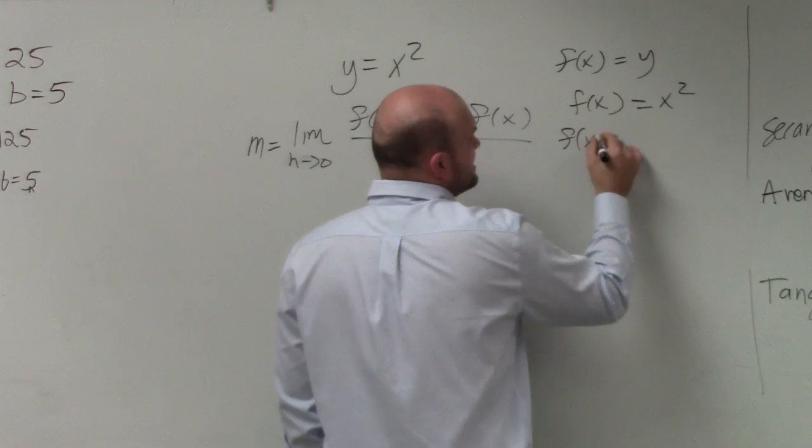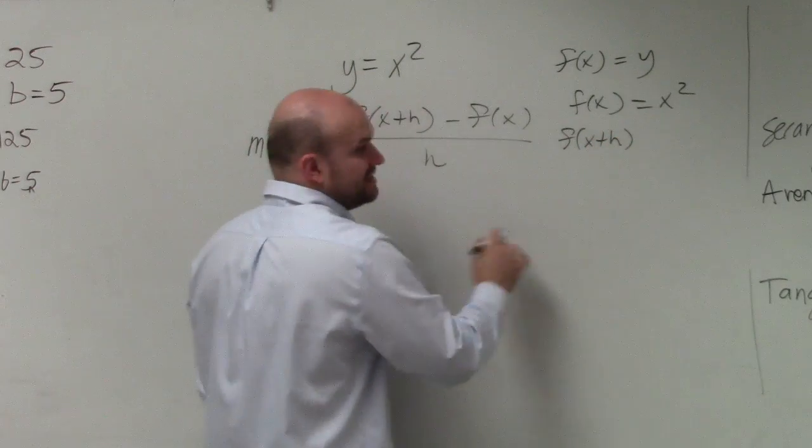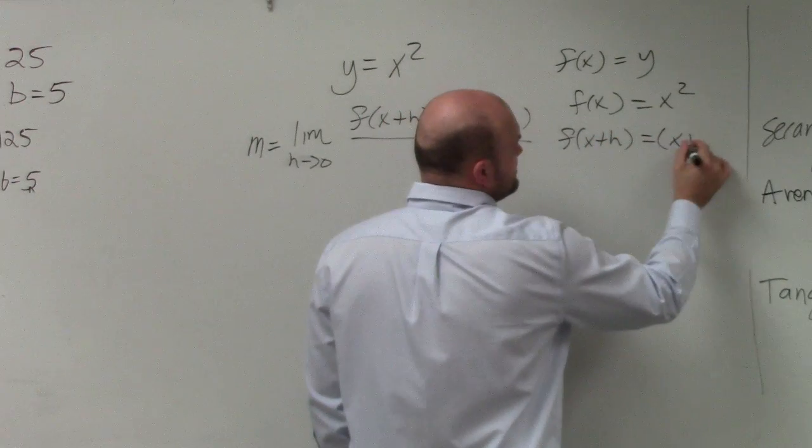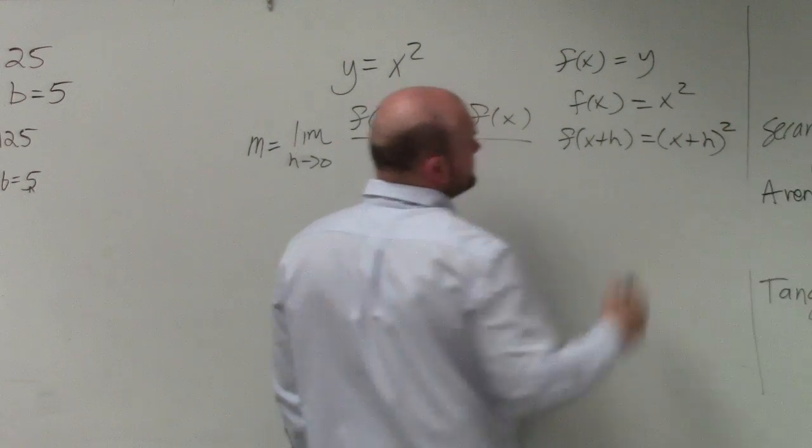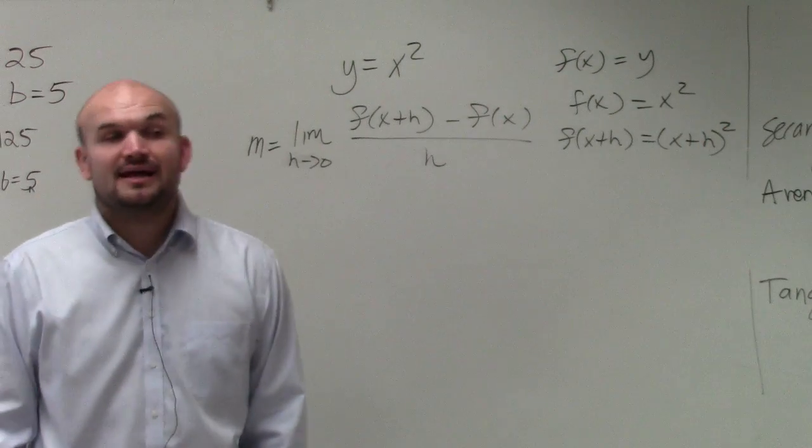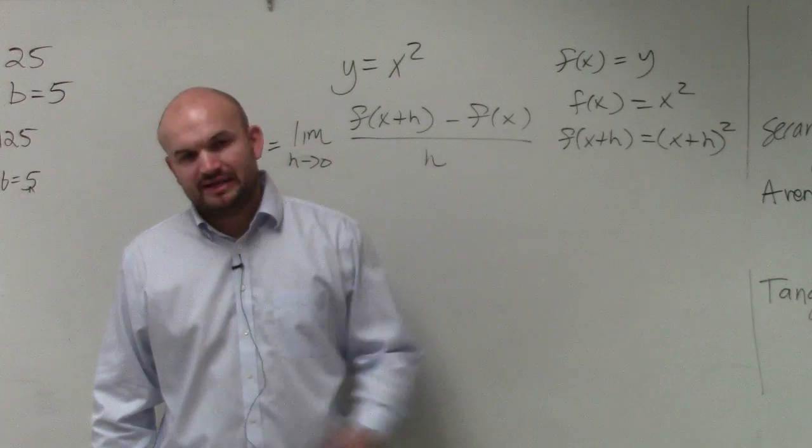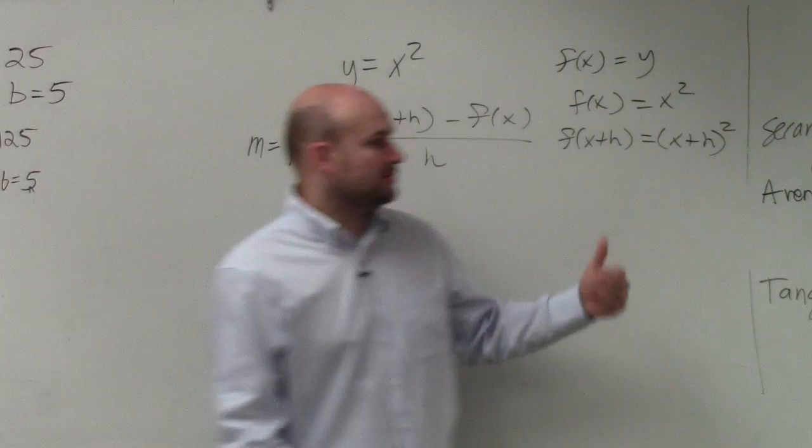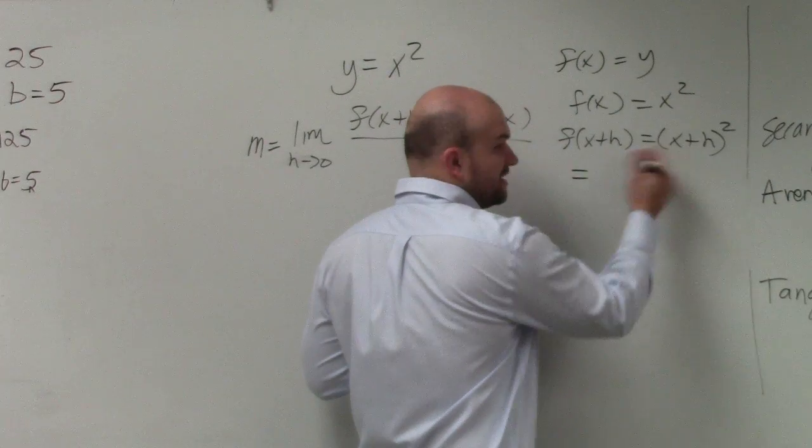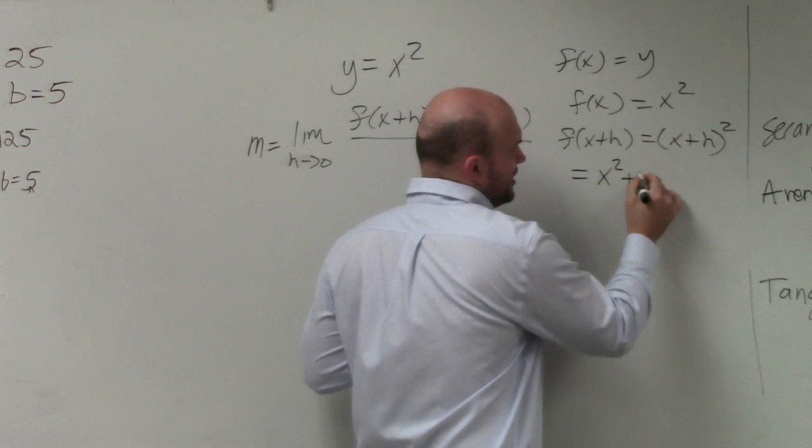Now, f(x+h) is (x+h) squared. You're going to see a lot of these, so you'll want to remember this. (x+h) squared is a binomial squared. We need to get used to multiplying binomial squareds, and you can see that if you apply FOIL, you can do this in your head.